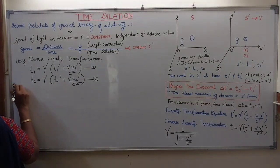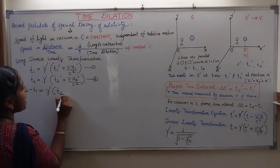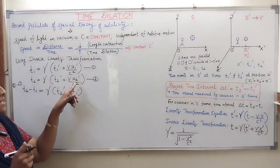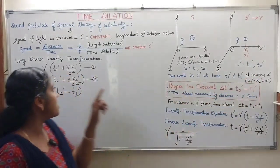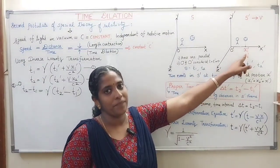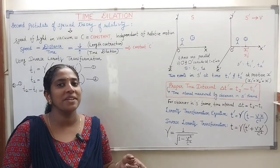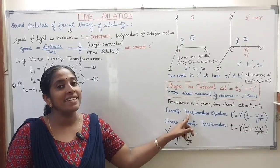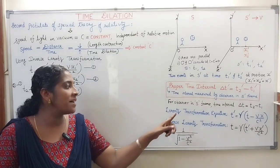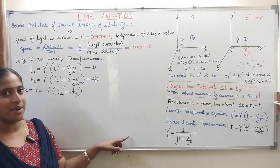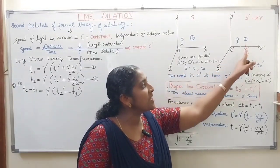Subtracting equation 1 from equation 2, we get T2 − T1 = γ(T2-dash − T1-dash), because X1-dash = X2-dash = X-dash — the event takes place at the same position in S-dash. So the space coordinate terms cancel out. We use the inverse Lorentz transformation here for convenience, unlike the length contraction derivation where we used the direct Lorentz transformation to cancel the time coordinate.